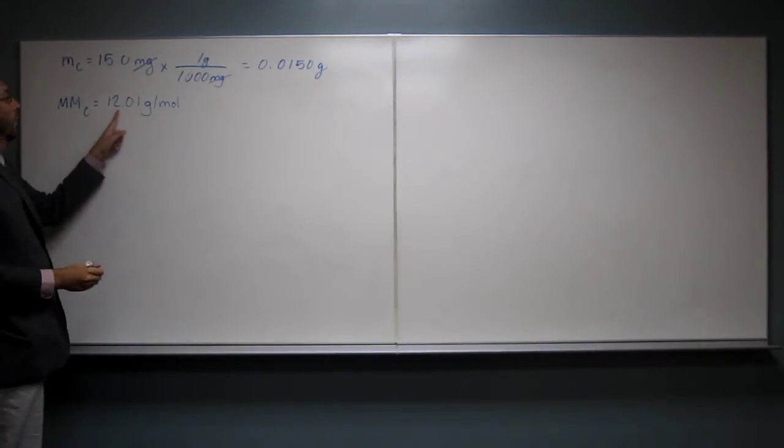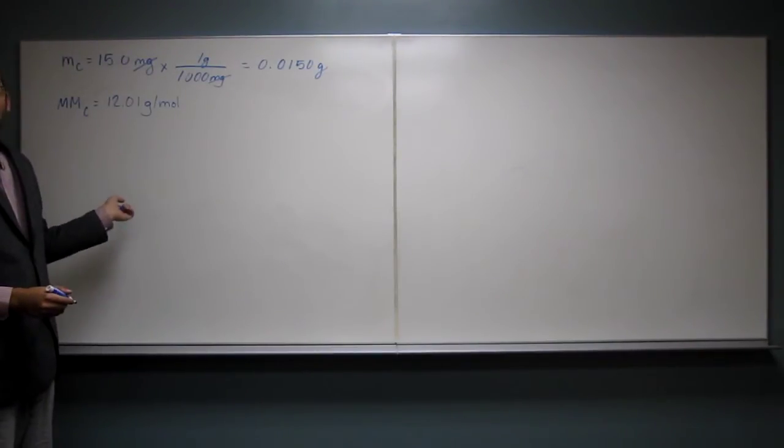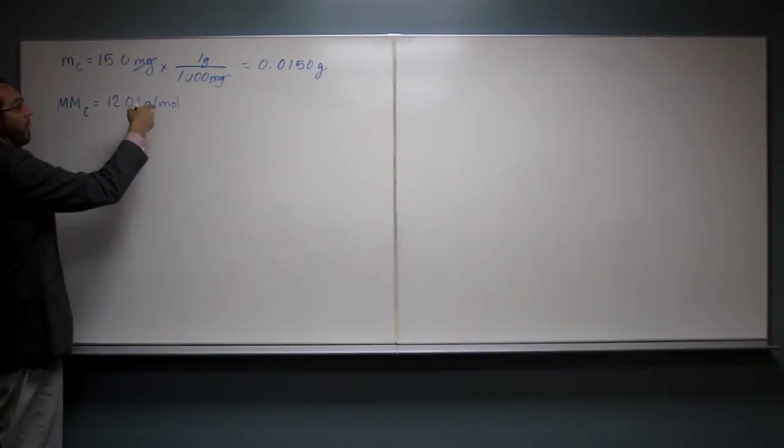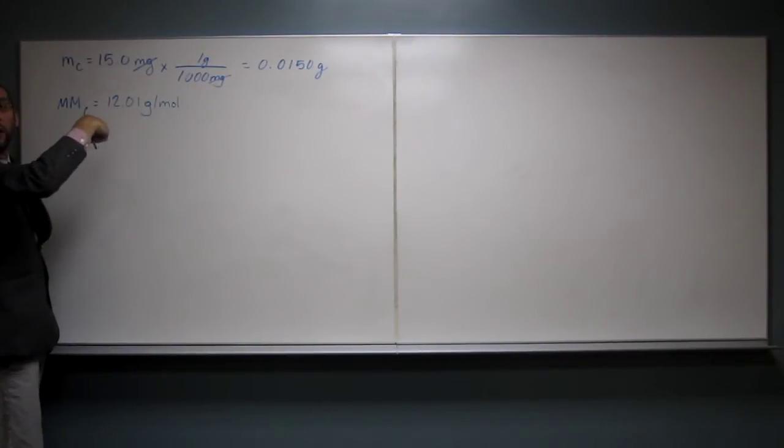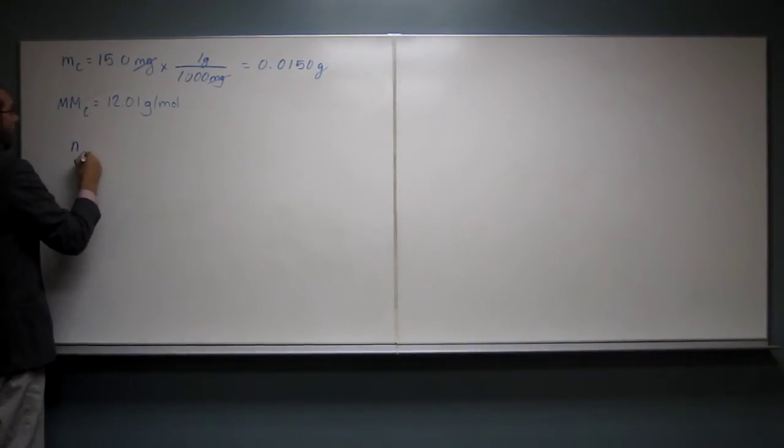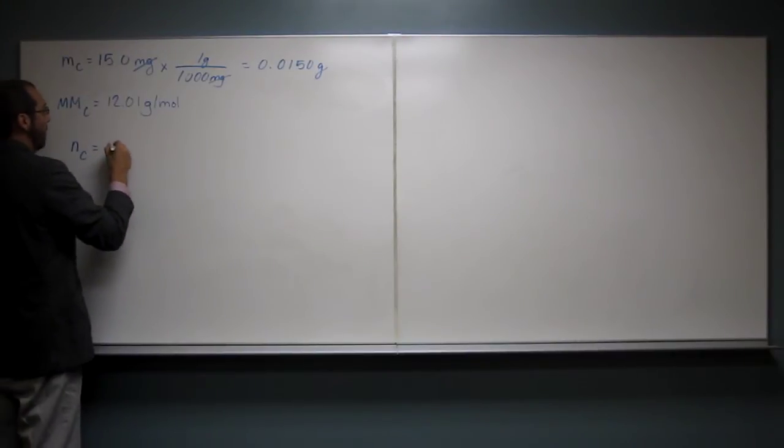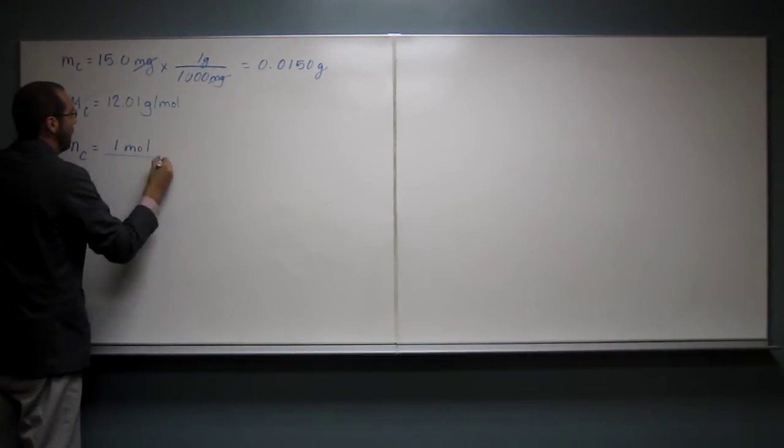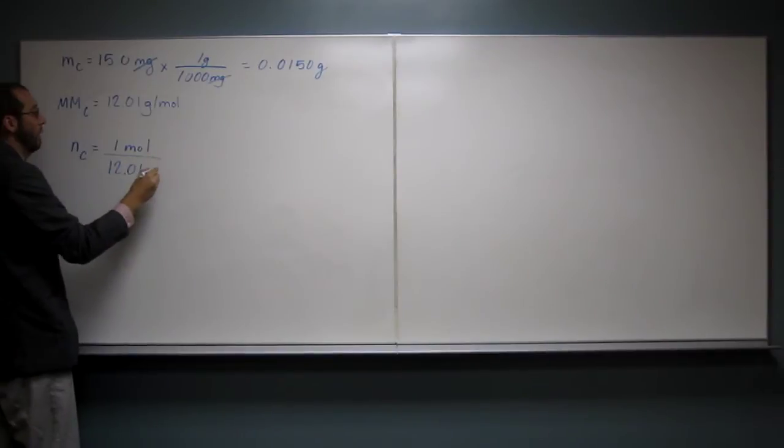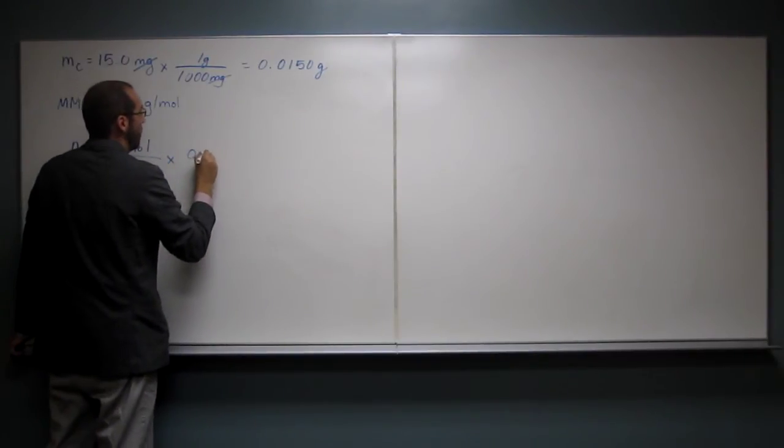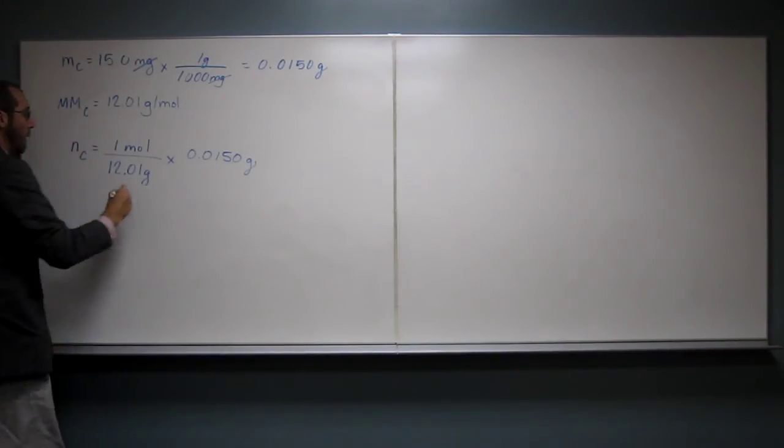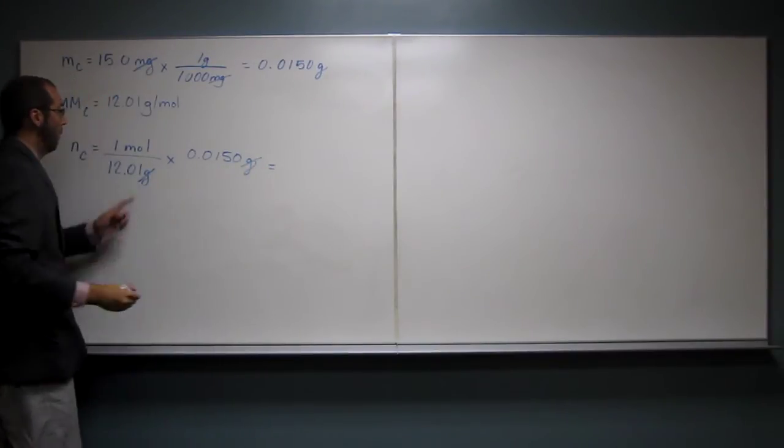Now, the molar mass of carbon, and it's in the number of atoms. So the molar mass of carbon tells us 12.01 grams per mole. And we have that many grams, so let's figure out how many moles we've got. So the number of moles of carbon is going to be 1 mole divided by 12.01 grams. Because you want moles to be on top. So we're going to multiply that by 0.0150 grams. And that's going to cancel with that, and that's going to give us moles. Does that make sense? Yes.